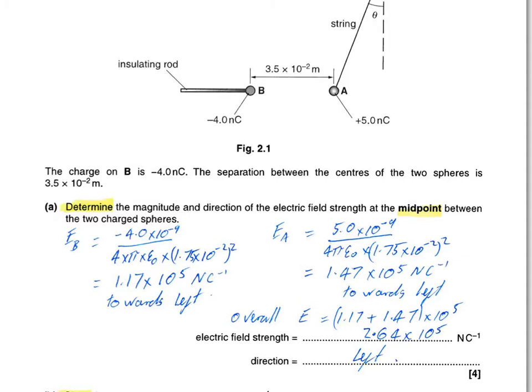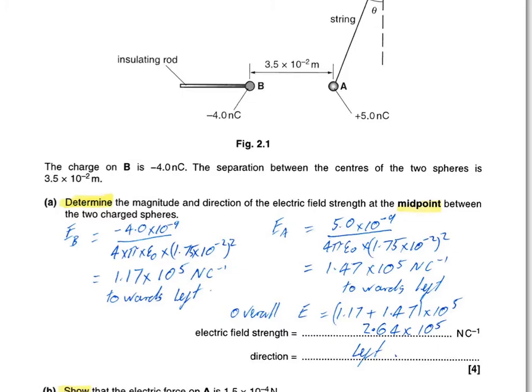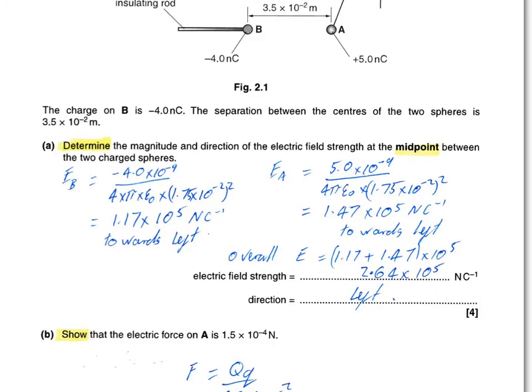Therefore, the magnitude is going to simply add. They're both pushing leftwards. And we end up with the electric field strength of those two numbers added together, 2.64 times 10 to the 5 newtons per coulomb. Volts per metre would have been just as good. And the direction is to the left.